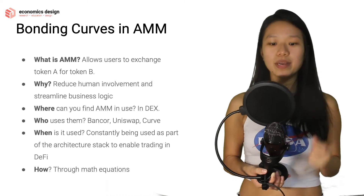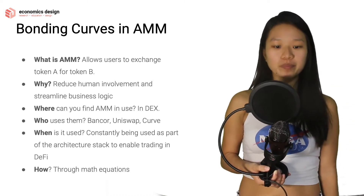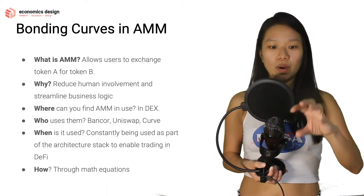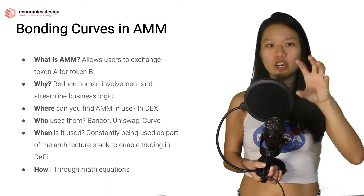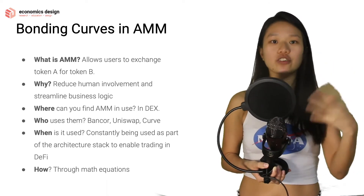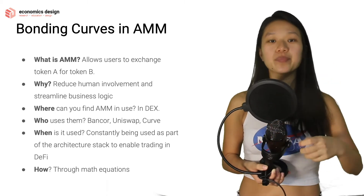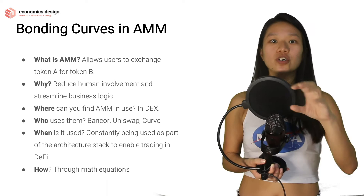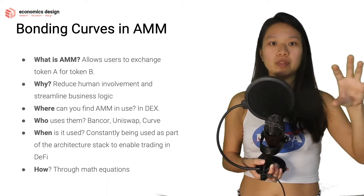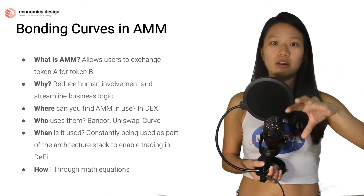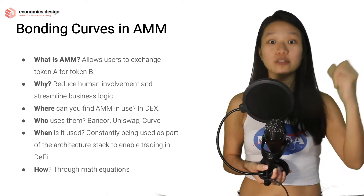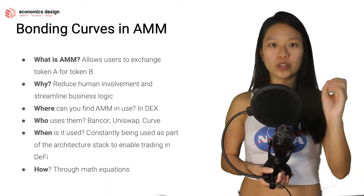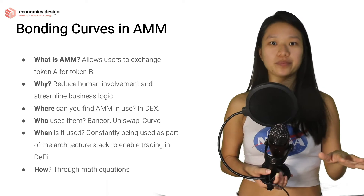Why? Because it reduces human involvement and it streamlines business logic. Right now we're talking about a basic exchange of tokens between token A and token B, but we can expand that easily — to getting information from Oracles, to looking at how to arbitrage different prices based on different Oracles. There are a lot of ways to streamline business logic with token bonding curves because it's all automated.